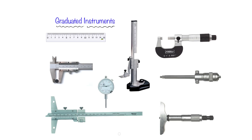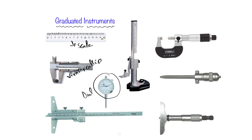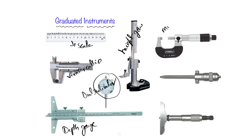Graduated measuring instruments have a graduated scale on them. You can see this is a scale with graduations used to measure the length of an object. This is a vernier caliper, which has a main scale and a vernier scale. This is a dial indicator, this is a vernier depth gauge, and this is a vernier height gauge.